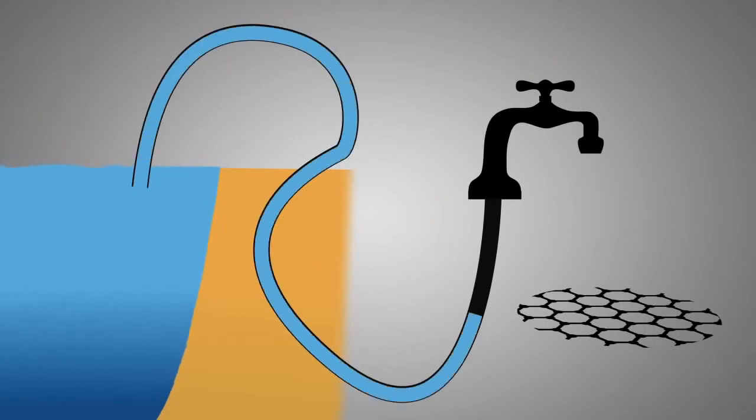Graphene could cheaply and easily remove salt from sea water, potentially turning the oceans into a vast drinking supply for thirsty populations.